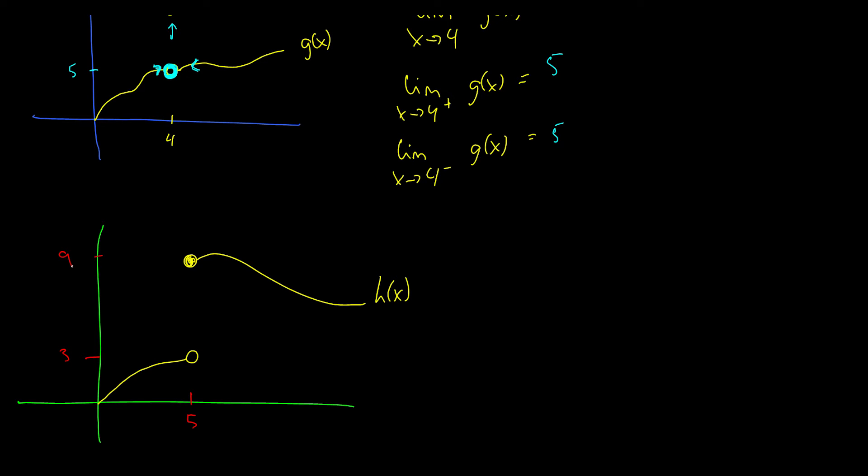Okay, so what do we know? Well, let's take a look as x approaches five from the left of our function h of x. Well, this is equal to three, since it finally ends its course at three right about here. So this is equal to three.